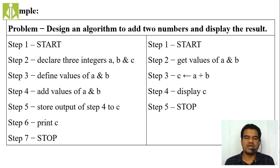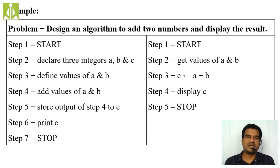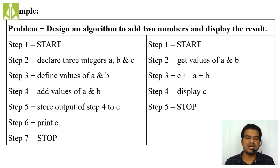We discussed how to write algorithms and looked at examples. When you have a problem statement and give it to a group of people, you get a group of algorithms — multiple solutions — not just one. That's where the necessity of analyzing algorithms comes in. When you have multiple algorithms, which are multiple solutions to the same problem, you need to determine which solution gives the best result in the most effective way.